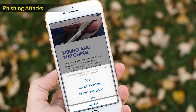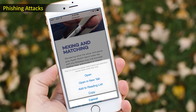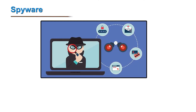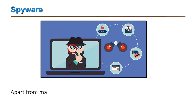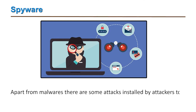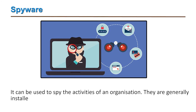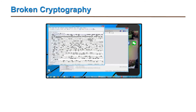Avoiding clicking on unnecessary links on mobile devices can help prevent such attacks. The fifth threat is spyware. Apart from malware, certain attacks are installed by attackers to spy on user systems. Spyware can be used to monitor the activities of an organization or an individual employed in an organization, and most of the time it is installed by employees or co-workers.